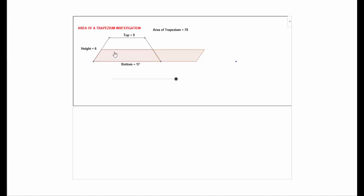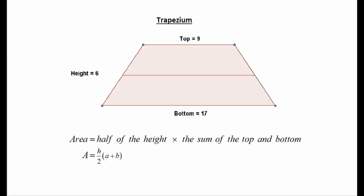That perpendicular height will be half of the total height of the trapezium, and the length of the base will be the length of the bottom plus the length of the top — because that bit there originally was the top — so the length here would be 17 plus 9, multiplied by half of whatever the height is. That gives us a formula for the area of a trapezium: half of the height multiplied by the sum of the top and bottom, or A equals H over 2 times (a plus b), where a and b are the parallel sides.